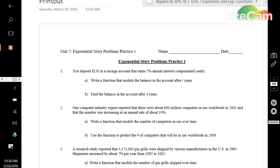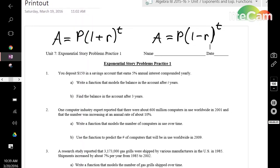There are two functions we've talked about in class pertaining to growth and decay exponential story problems. The first one is A equals P times (1 plus r) to the power of t, and the other is A equals P times (1 minus r) to the power of t. These two functions look very similar except for one stark difference: 1 plus r versus 1 minus r.